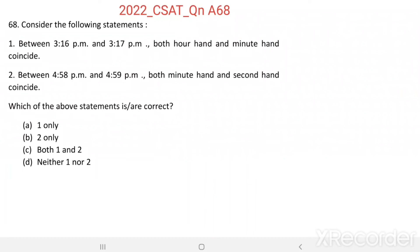Question number 68. Consider the following statements. Statement 1: Between 3:16 PM and 3:17 PM, both the hour hand and minute hand coincide. Statement 2: Between 4:58 PM and 4:59 PM, both the minute hand and second hand coincide. Which of the above statements is or are correct?